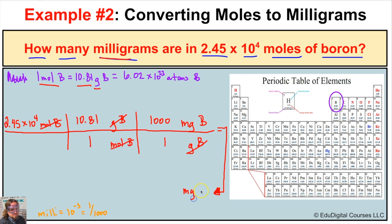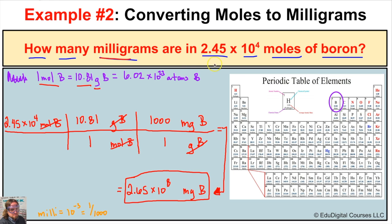To solve, we start on the left with our starting quantity and move left to right. Numbers other than one in the numerator we multiply by. So: 2.45 times 10 to the 4th, times 10.81, times 1,000, gives us 2.65 times 10 to the 8th milligrams of boron as our final answer. So 2.45×10⁴ moles of boron equals 2.65×10⁸ milligrams of boron.